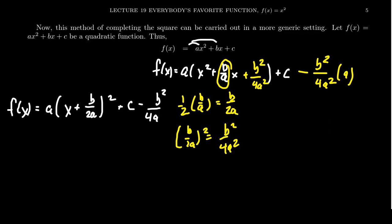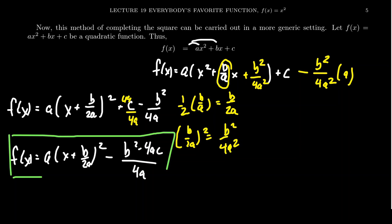And then we have plus c minus b²/(4a). Kind of like with the quadratic formula, we're going to have to find a common denominator. Times top and bottom by 4a, we then end up with f(x) = a(x + b/(2a))² and then we have negative (b² - 4ac)/(4a).